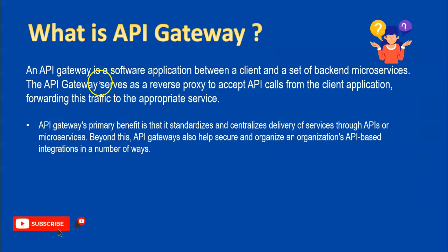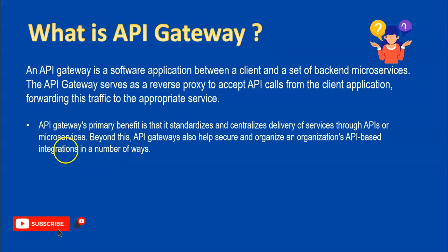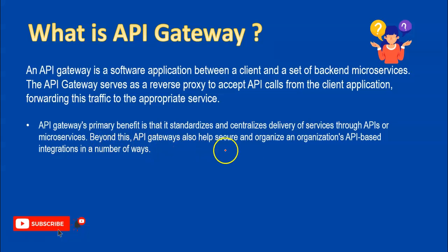An API gateway is a software application that sits between a client and a set of backend microservices. The API gateway serves as a reverse proxy to accept API calls from client applications, forwarding traffic to the appropriate service — like our main API gateway forwarding to the product list and now to the user data. The API gateway's primary benefit is that it standardizes and centralizes the delivery of services through APIs or microservices, and also helps secure and organize API-based integration.